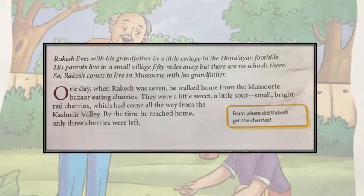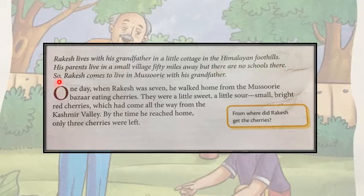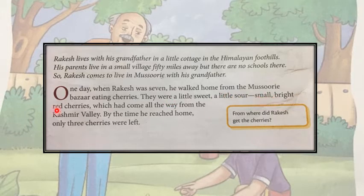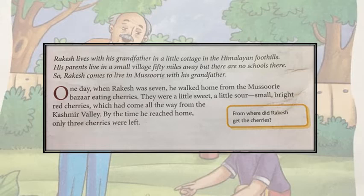Now let's begin our lesson. Rakesh lives with his grandfather in a little cottage in the Himalayan foothills. His parents live in a small village 50 miles away but there are no schools there, so Rakesh comes to live in Mussoorie with his grandfather. One day when Rakesh was seven, he walked home from the Mussoorie Bazaar eating cherries — a little sweet, a little sour, small, bright red cherries which had come all the way from the Kashmir valley. By the time he reached home, only three cherries were left. Rakesh was enjoying the taste of the cherry as he walked home from the Bazaar.